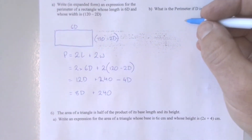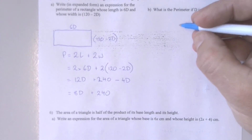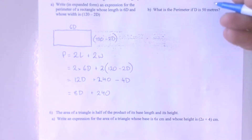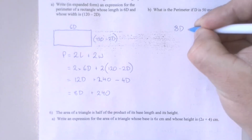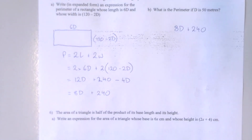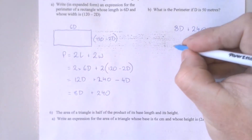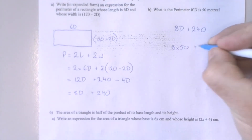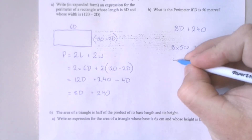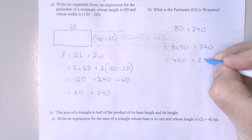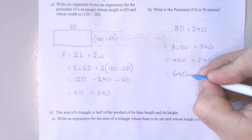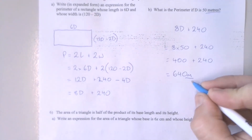Question 5B follows on from 5A. In 5A we needed to write an expression to describe the perimeter of the rectangle, which we did: 8D plus 240. Now this is just a simple substitution question. It's telling us that D is 50. So we rewrite it by substituting 50 in place of D plus 240. That gives us 400 plus 240, which is 640 meters. Don't forget your units — they give them to you — you've got to answer with units.